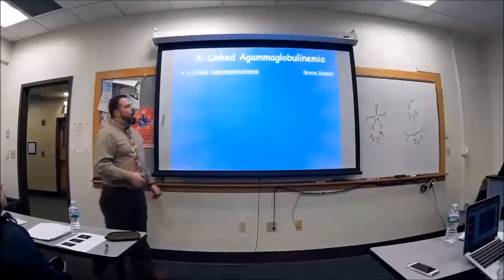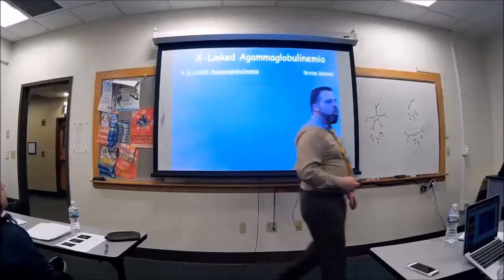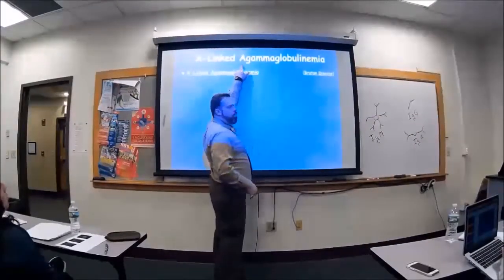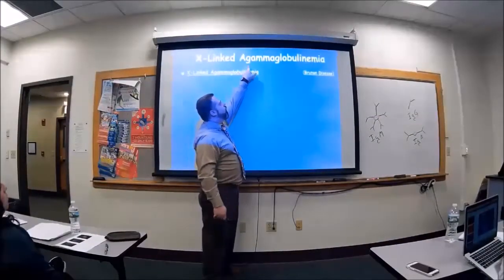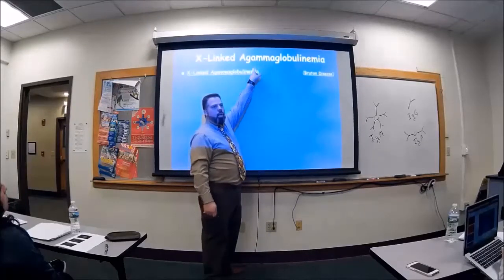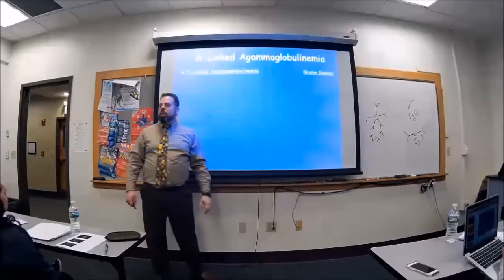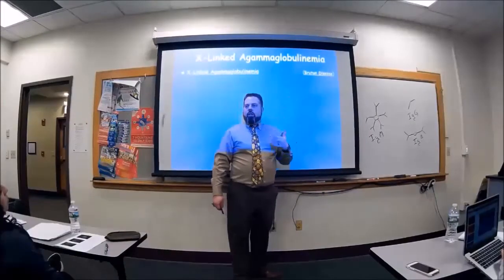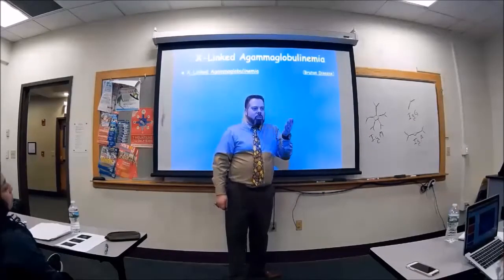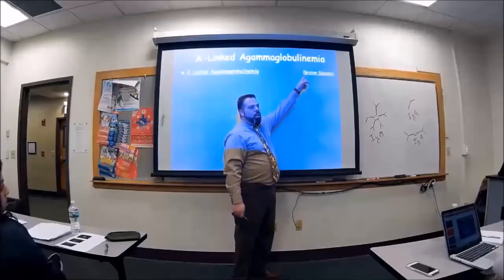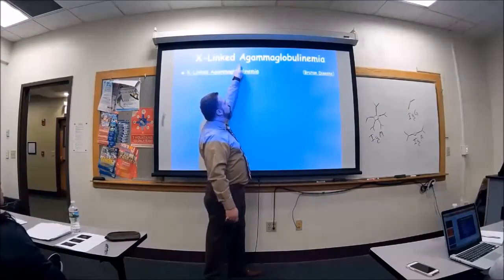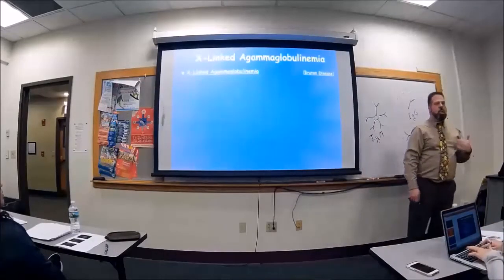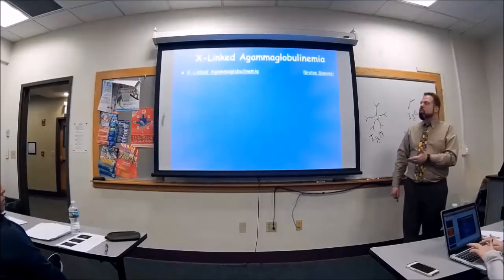X-linked agammaglobulinemia. Let me also tell you too, if you ever see like a letter A or AN as a prefix in front of something, that means without or not. This gamma globulin is basically telling you immunoglobulin. It's antibodies and it's in the blood. So basically it's saying no antibodies in the blood. Or this person is just not producing antibodies. That's what this disease is.